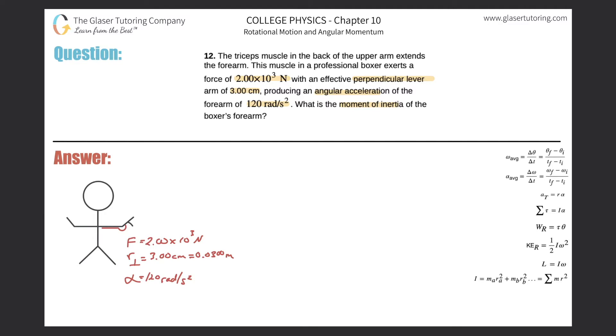By the way, it extends the arm. So when the tricep muscle contracts, it essentially pulls the forearm down in this way. Here we have the force being applied in this particular direction. That's the force, the vector, and they told us the value.